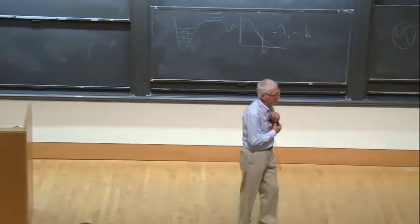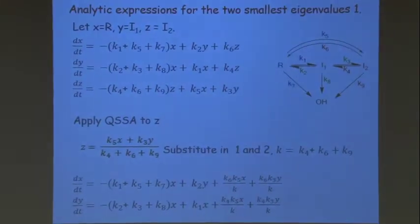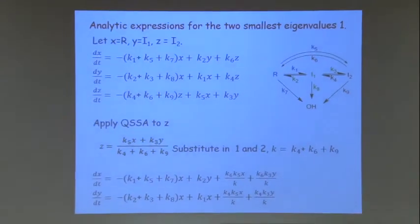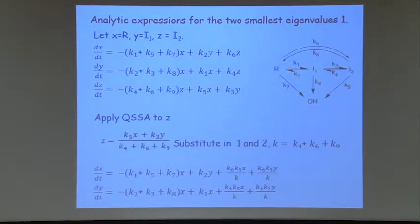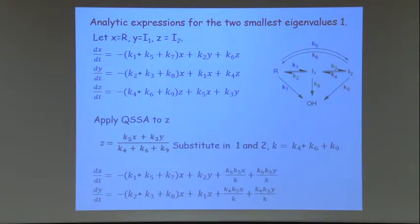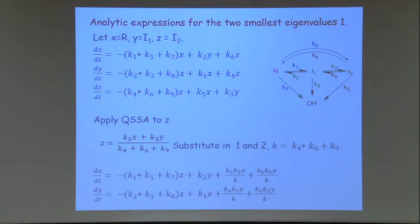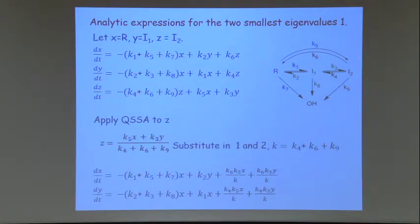This is the homework from two nights ago. Let me go through it now. So what we said was, here's the system we're dealing with: R going to I1, going to I2, with the possibility of producing OH from each of these species and also the possibility of going directly from R to I2.